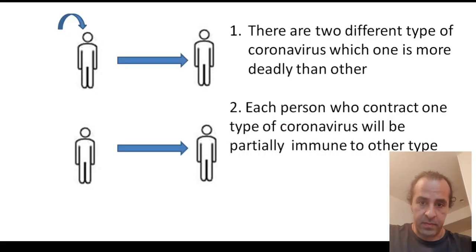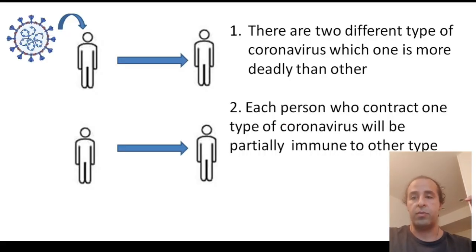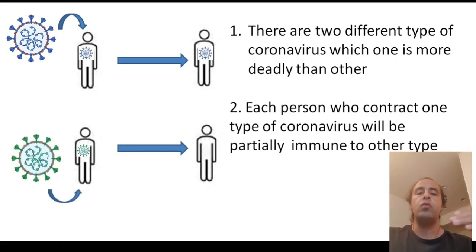As I explained in my previous video, which I'll leave a link in the description, there are two types of coronavirus, L and S. The L-type is more aggressive and deadly and the S-type is weaker. But whoever gets one of these coronaviruses will be immune to the other one. Why? Because the spike of these coronaviruses is very similar. So the antibody that produces inside the body to fight one of these viruses can recognize the other one as well. So the person will be partially immune.